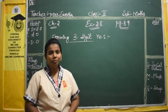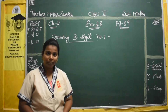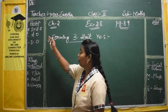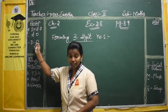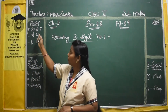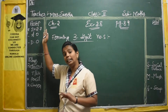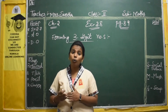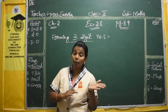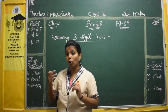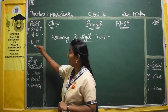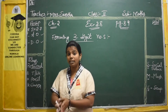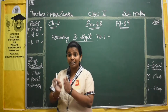Welcome to Munchka's children. In the previous class, we completed exercise number 2.7. In that exercise, we learned how to arrange numbers in ascending order and descending order — ascending order means arranging from the smallest number to the biggest number, and descending order means from the biggest number to the smallest number.